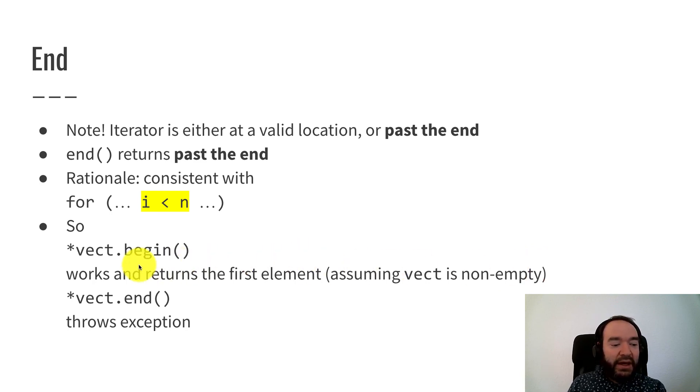But you can't dereference the end iterator because the end iterator is not a valid location. It doesn't have any element there. So if you have an iterator pointing at the end and you dereference it, that's a logic error and it will throw an exception.